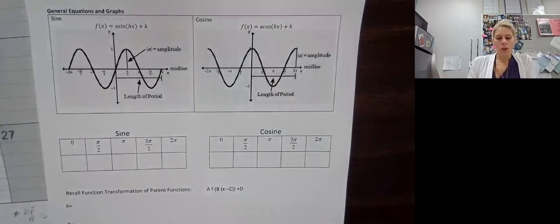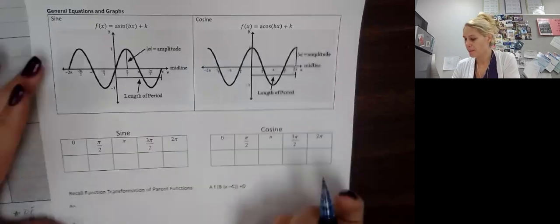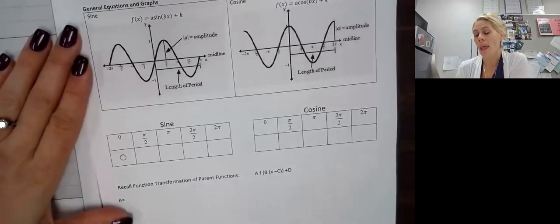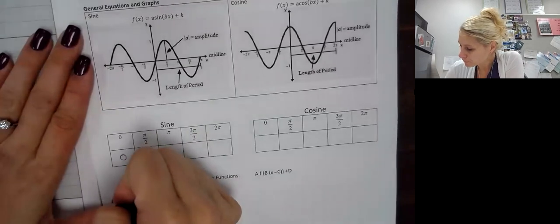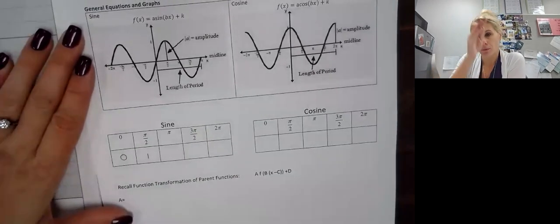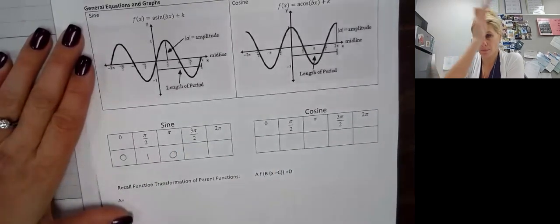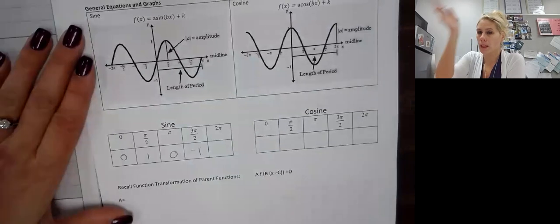So in our unit circle, if you get out your unit circle right now — remember, sine was your second value in the coordinate. So if we look at zero, the coordinate for sine would be zero. At pi over 2, if you look at your unit circle, we would be at 1. At pi, we would be at zero. At 3 pi over 2, we'd be at negative 1. And completing our whole circle, we would be back at zero.